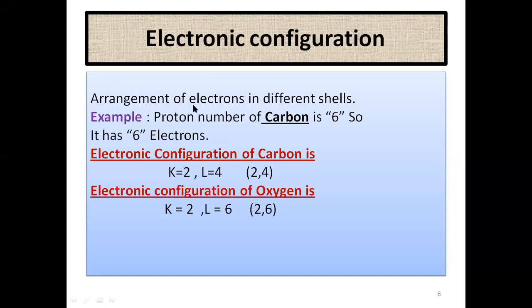We will talk about the electronic configuration of the carbon element. Carbon has 6 electrons, so its electronic configuration will be: K shell is equal to 2, L shell is equal to 4 electrons. The first shell (K shell) has 2 electrons and the L shell has 4 electrons, so the configuration is 2 and 4.